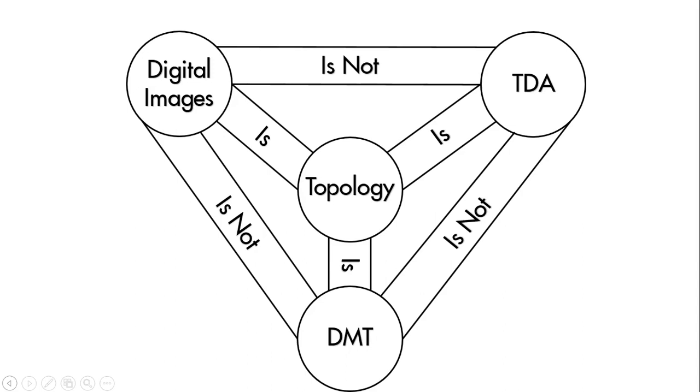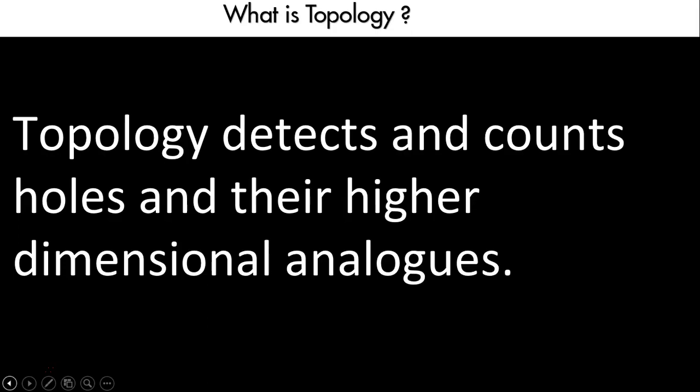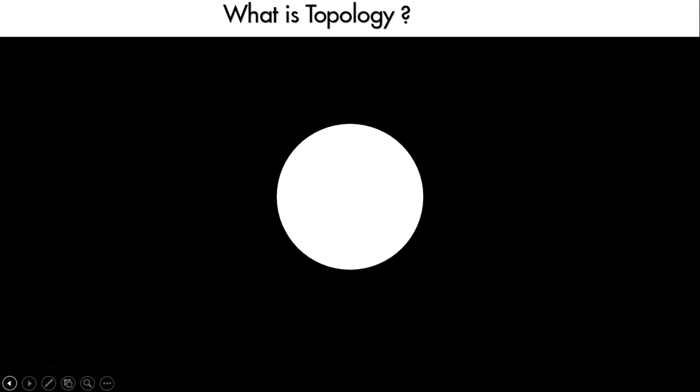Before we look at any of those three areas, the first question is: what is topology? I would define it as: topology detects and counts holes and their higher-dimensional analogs in objects. You might say it's not entirely clear why I would even want to detect a hole in an object, much less a higher-dimensional hole. But first, let's think about what it would even mean to detect or find a hole in an object, because a hole is kind of a nebulous thing - it's defined in terms of what it isn't. The fact that there's a hole in the middle of a picture is really because of all the stuff surrounding that negative space.